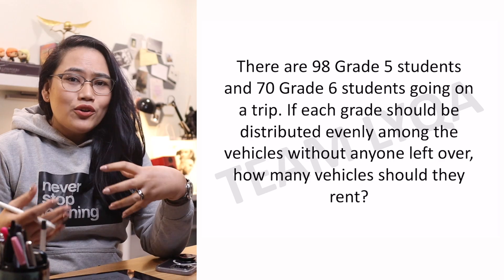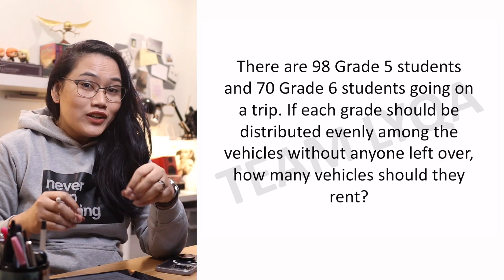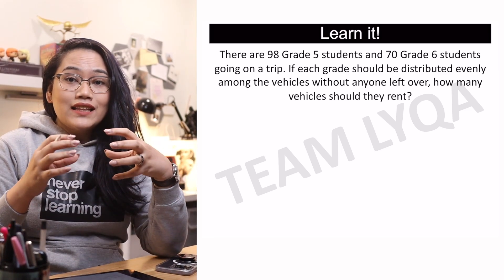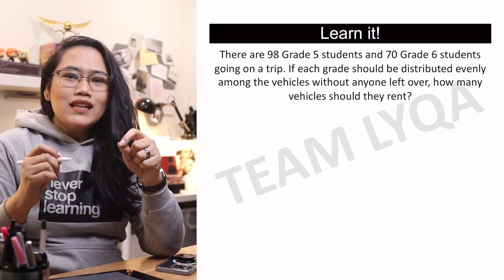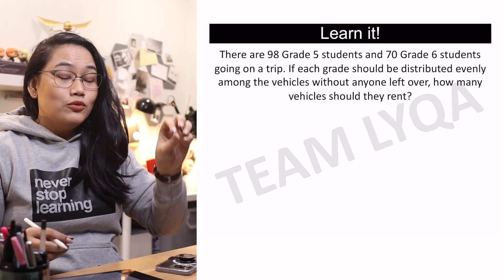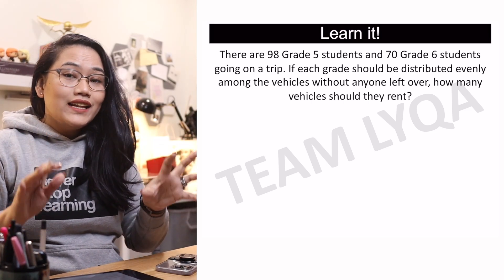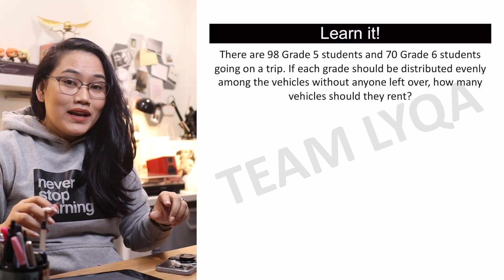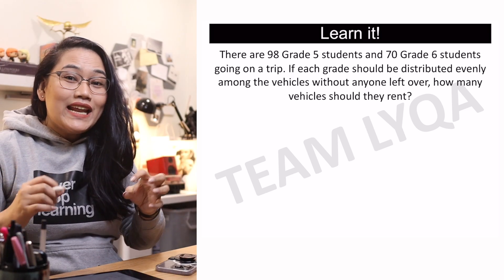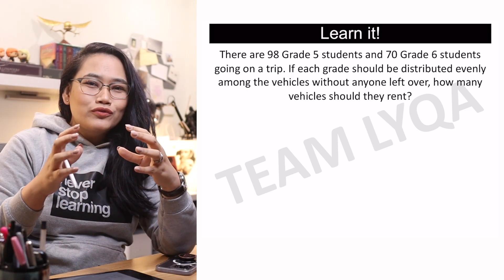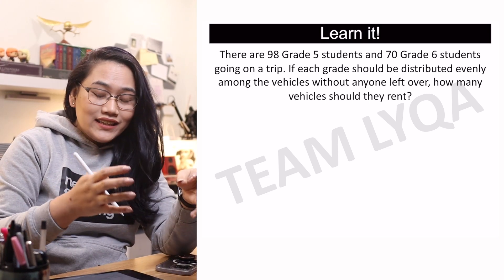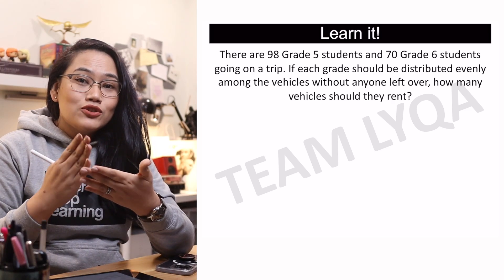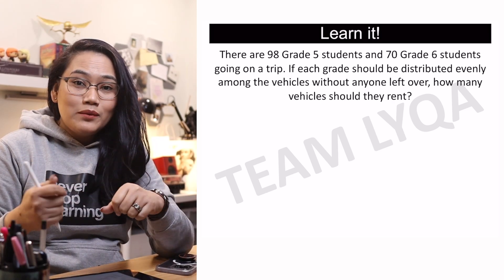Kung i-imaginin natin sila na parang totoong tao na hinahati natin, mas mapipicture natin kung ano yung ginagawa natin sa problema. If there are 98 grade 5 students and 70 grade 6 students, tapos hahati-hatian mo sila, bawat grupo ng grade 5 at grupo ng grade 6 ay dapat pantay-pantay ang dami, at yung dami ng mga sasakyan ay pareho. Kitang-kita na may hinahati tayo dito — ang hinahanap natin yung shared factor ng 98 at 70, yung dami ng sasakyan kung saan pwede mong hatiin ang mga estudyante na walang tira or walang remainder.